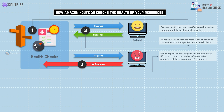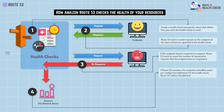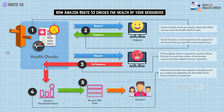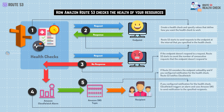If the endpoint doesn't respond to a request, Route 53 starts to count the number of consecutive requests that the endpoint doesn't respond to. Based on the way we have configured the health check, it will fail it. For example, if you are checking for unhealthy responses up to three times in your health check and it doesn't respond three times, it will mark the endpoint as failed.